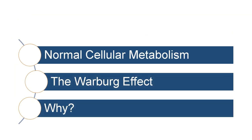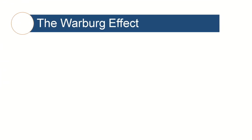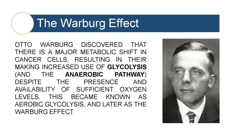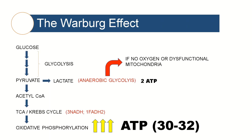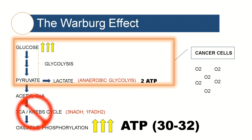Now that we've had a basic look at the processes and outcomes of normal cellular respiration, let's look at the Warburg effect. Otto Warburg was a German scientist who discovered that there is a major metabolic shift in cancer cells, resulting in their making increased use of glycolysis despite the presence and availability of sufficient oxygen levels. This became known as aerobic glycolysis and later as the Warburg effect. You have oxidative phosphorylation resulting in about 32 ATP molecules in the presence of oxygen, and if there is limited or no oxygen, the cell can still make some energy via anaerobic glycolysis. What Warburg discovered is that cancer cells, even in the presence of sufficient oxygen, fundamentally make use of anaerobic glycolysis and not oxidative phosphorylation. Why would cancer cells move away from a pathway that produces about 32 molecules of ATP to one that only produces about 2?